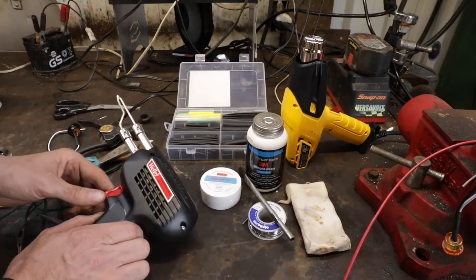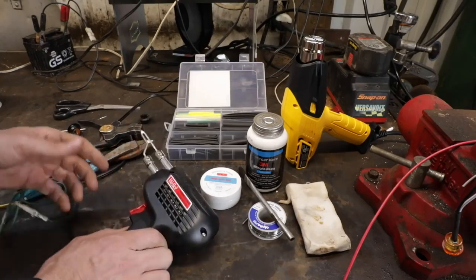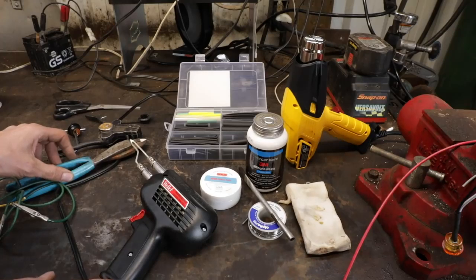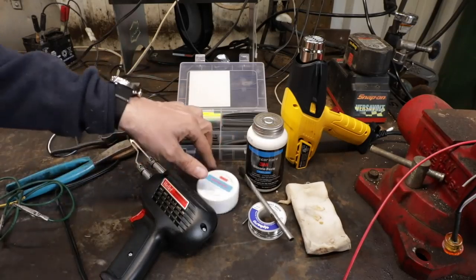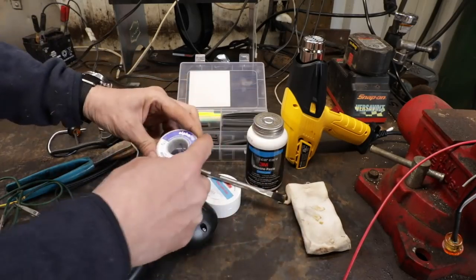So just get yourself a soldering gun. You don't have to get anything fancy. These Wellers are good. They're probably in the $30, $40 range. Not very much. You want some rosin paste flux, a little brush, and some rosin core solder.